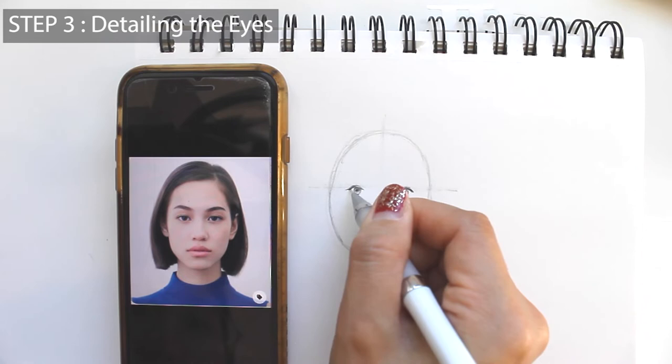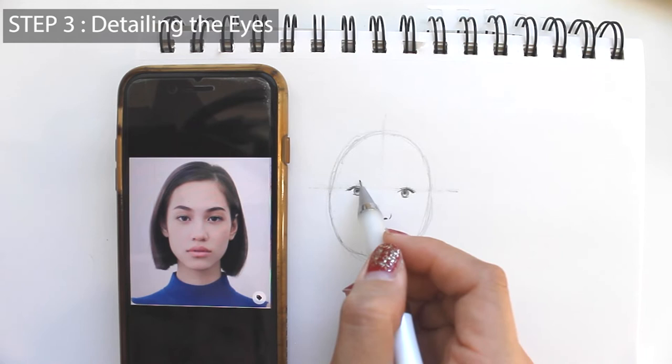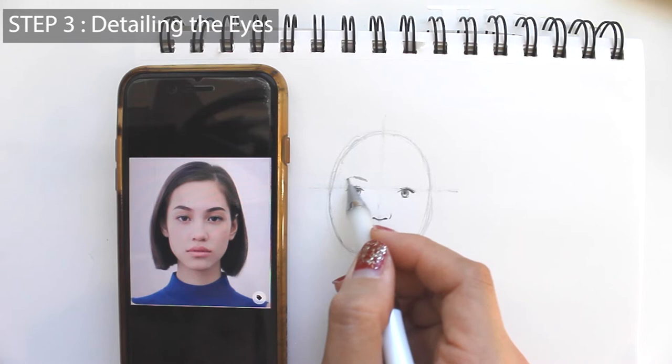Go ahead and define the shape of the eyebrows. I usually start with the part where it's closer to the nose. Once you are happy with the shape, then make them darker if you want. If you make them dark right at the beginning, it will be more difficult to erase later.